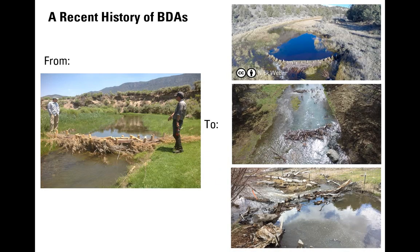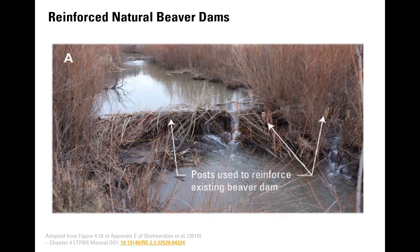It's helpful to trace the evolution of thought over the last decade regarding BDAs, to see how different landscape cues made this practice more efficient across a range of settings. BDAs didn't necessarily start as BDAs — they started as reinforcing natural beaver dams in systems where evidence showed that dams tended to blow out or breach on an annual or two-year timeframe, which was limiting the benefits they could provide. The first step was simply reinforcing those dams with posts to increase their persistence.